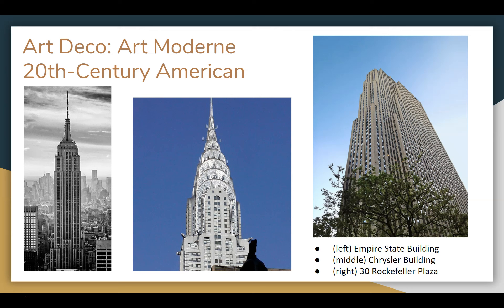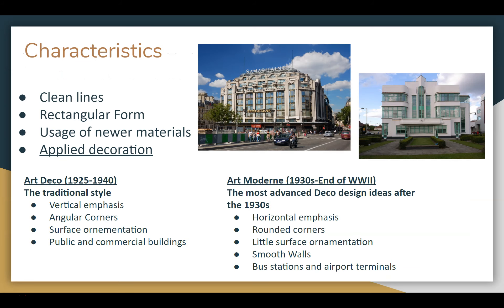Then there's Art Deco and Art Moderne. This style is more for office buildings than houses — the Empire State Building is a good example. Characteristics: clean lines, rectangular shape, mineral materials like mirrors and glass blocks, and applied decorations so each building was a little different — statues on the roof and carved designs on the sides. Art Deco was the traditional style — more vertical with angular 90-degree corners — and used surface ornamentation like carving in wood and paint. It was usually used in public and commercial buildings.